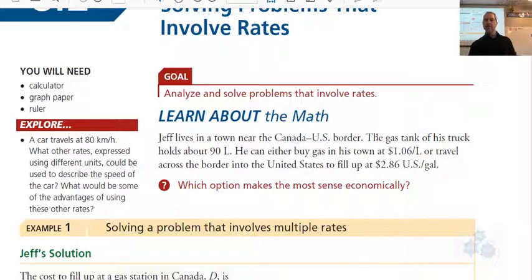So it says the gas tank of his truck holds about 90 liters. He can either buy gas in his town at $1.06 per liter or travel across the border into the U.S. to fill up for $2.86 U.S. dollars per gallon. So which option seems to make the most sense economically?